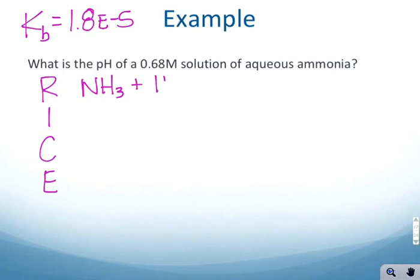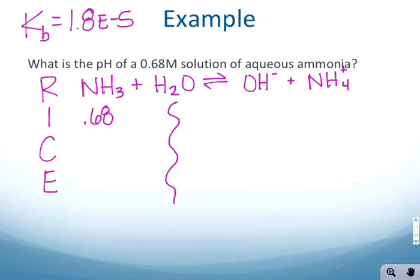We're going to produce the hydroxide ion and the conjugate acid, ammonium NH₄⁺. That's our reaction. The initial concentration: we have 0.68 molar of the ammonia. The water is not going to participate in our RICE table because it is not aqueous. Liquids and solids do not participate in equilibrium, only the aqueous and gases. The starting concentrations of the hydroxide and the ammonium are both going to be 0.